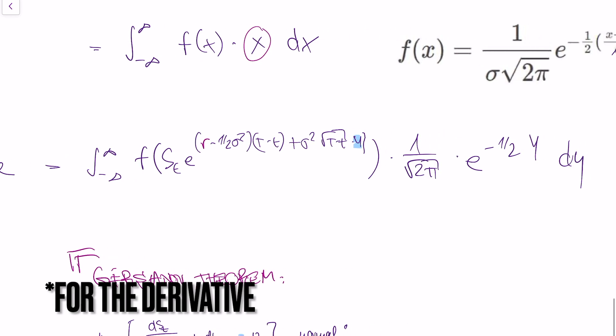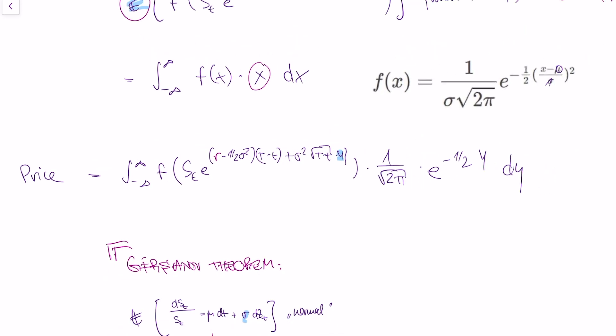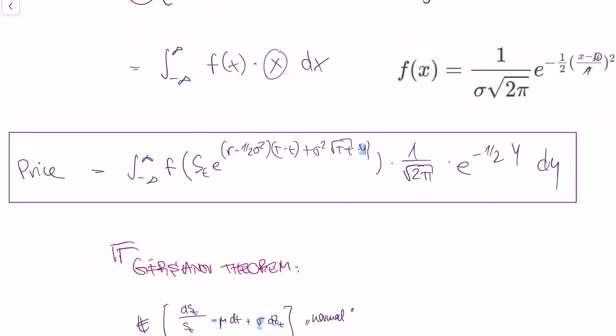For example, if my derivative pays off the square of the asset value at time T, I substitute the square function and evaluate the integral. In the next videos, I will show you how to actually evaluate this integral and obtain the price for a specific derivative — namely, a call option.